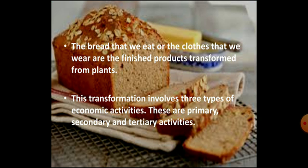Have you ever wondered, children, how a loaf of bread is made? There are various processes involved in its making. First, a farmer tills land and grows wheat. Then the wheat is taken to the mandi for selling. From there, it is taken to factories to make bread. This transformation of a plant to a finished product involves three types of economic activities: primary, secondary and tertiary activities.